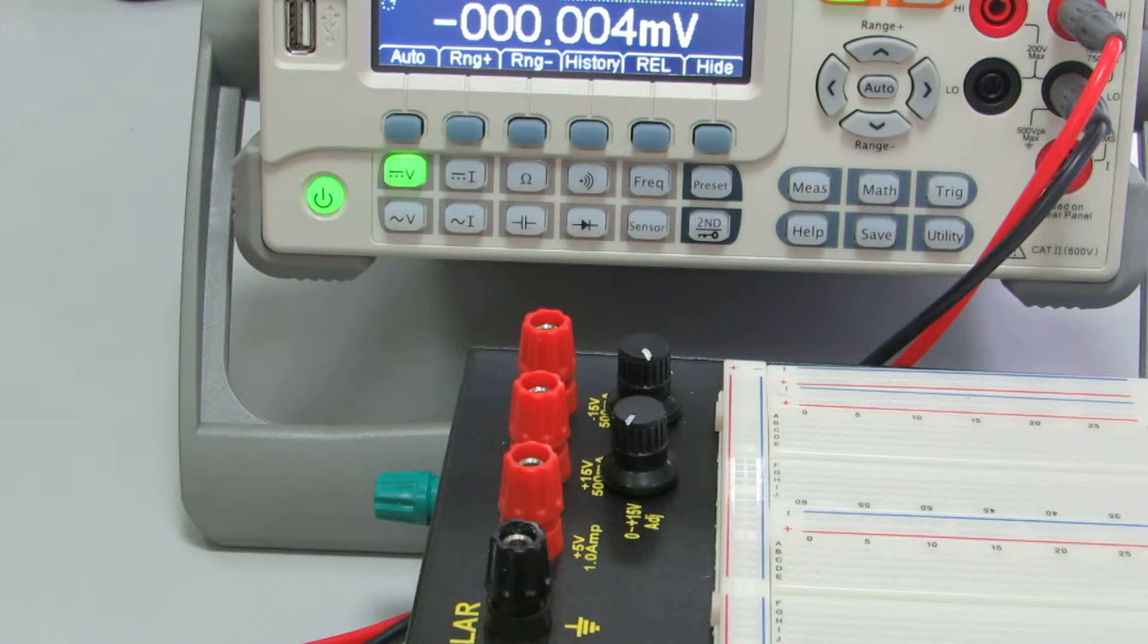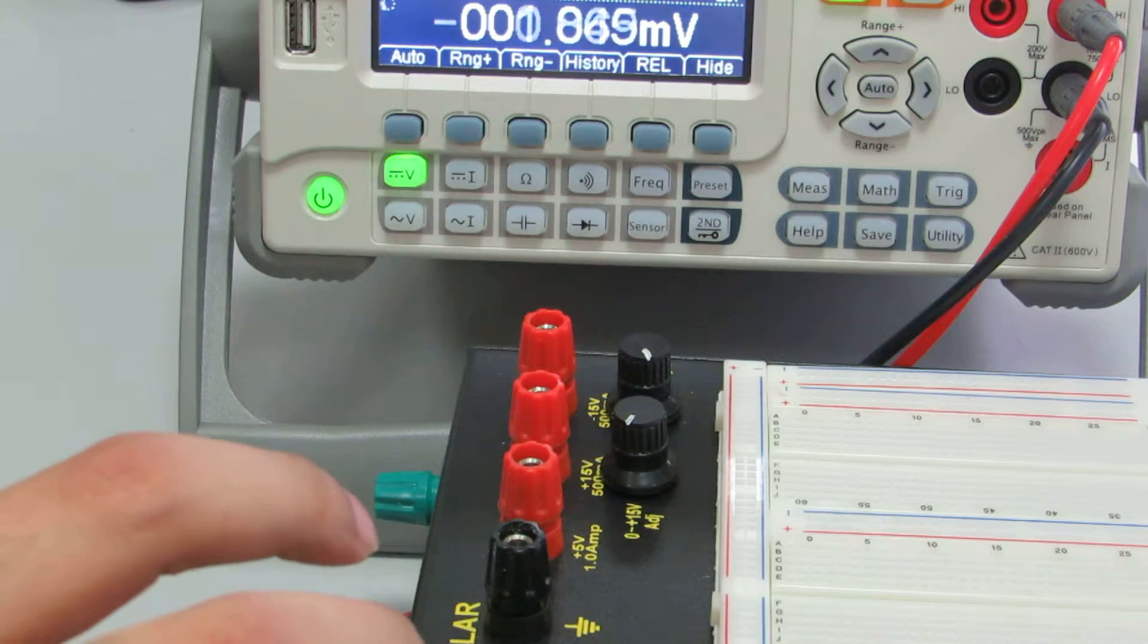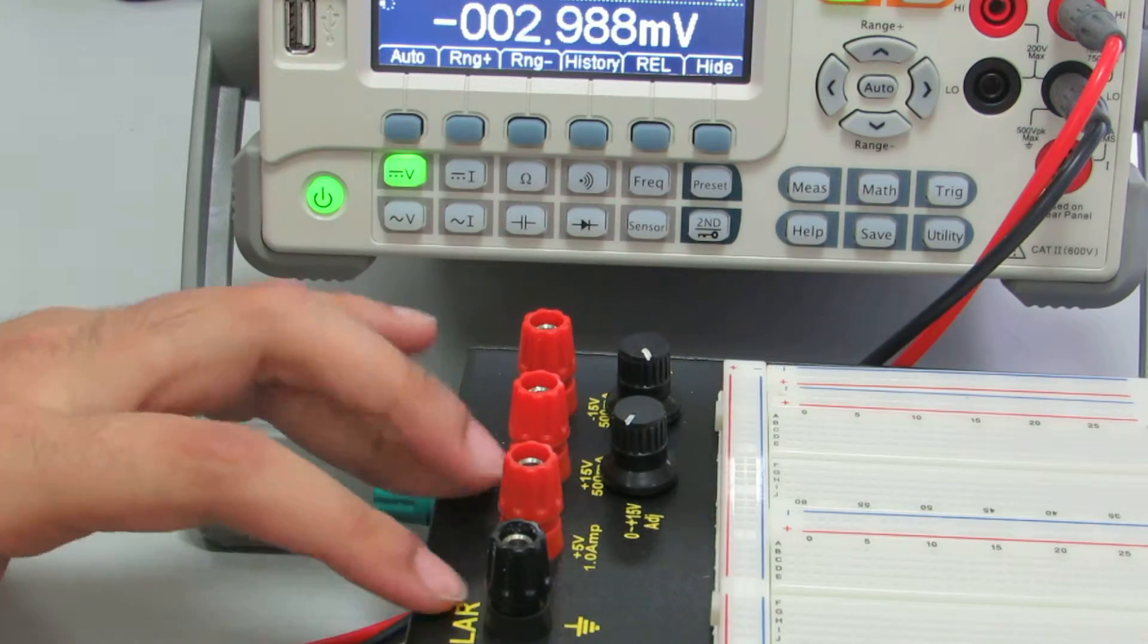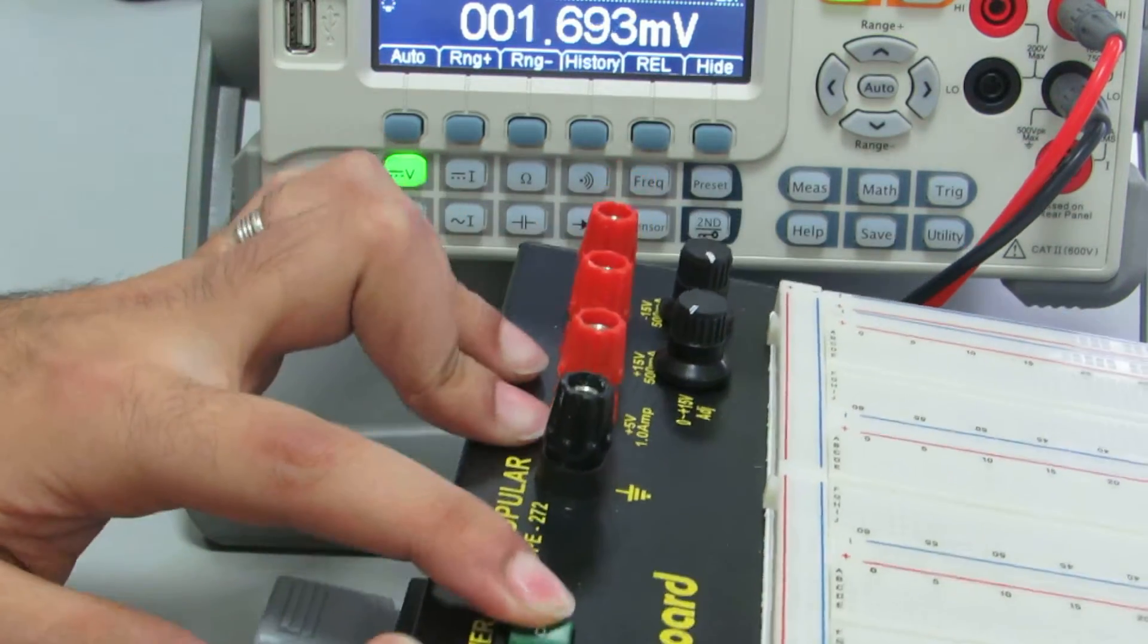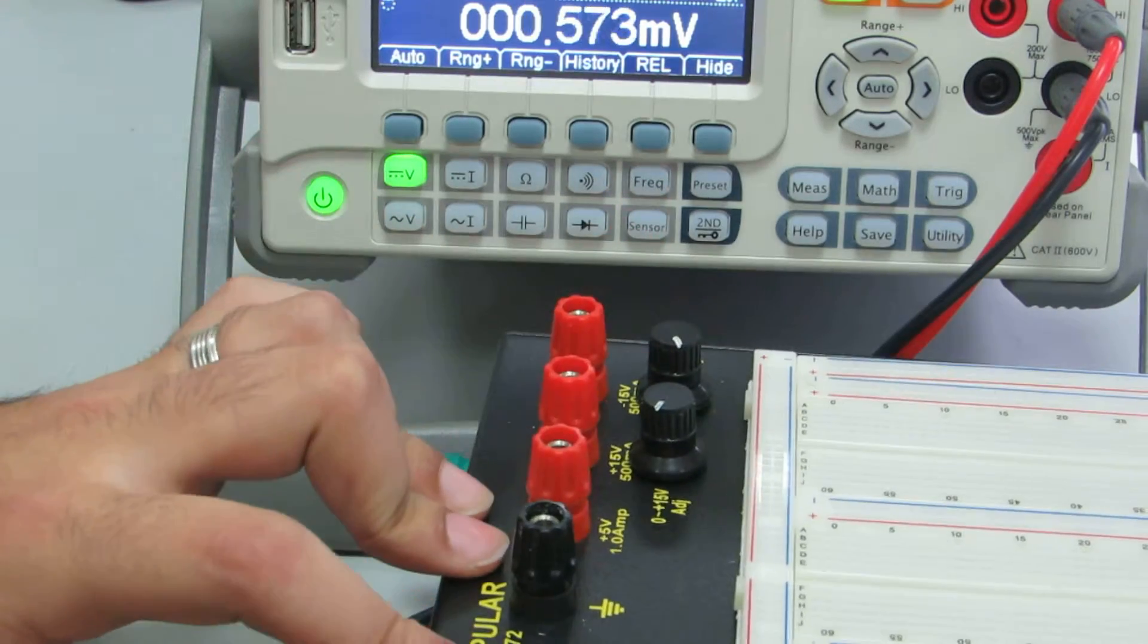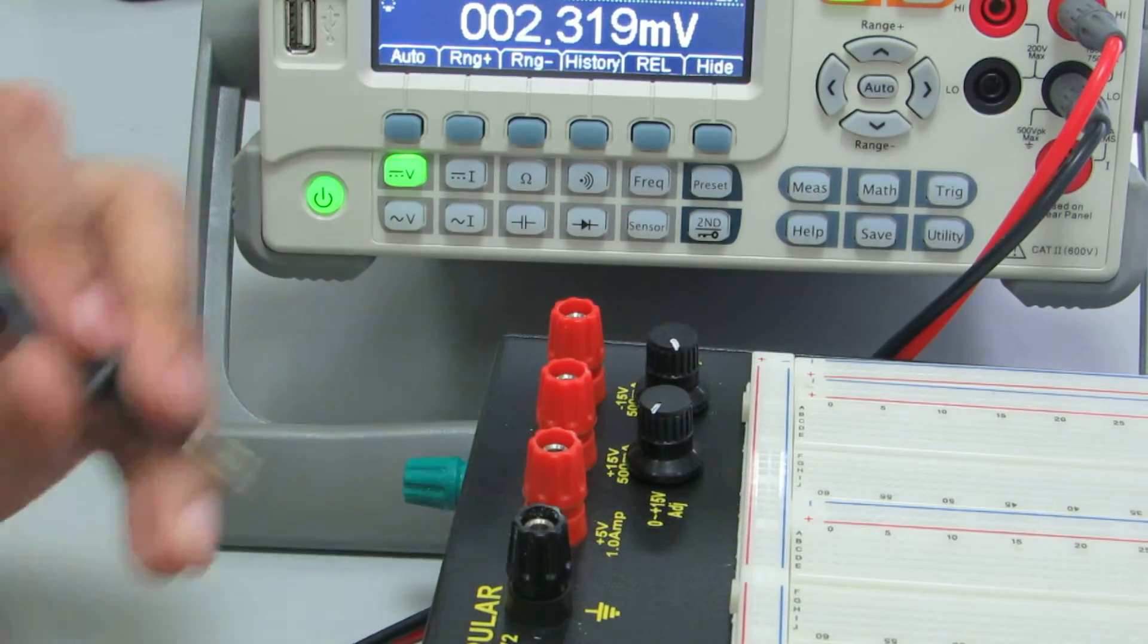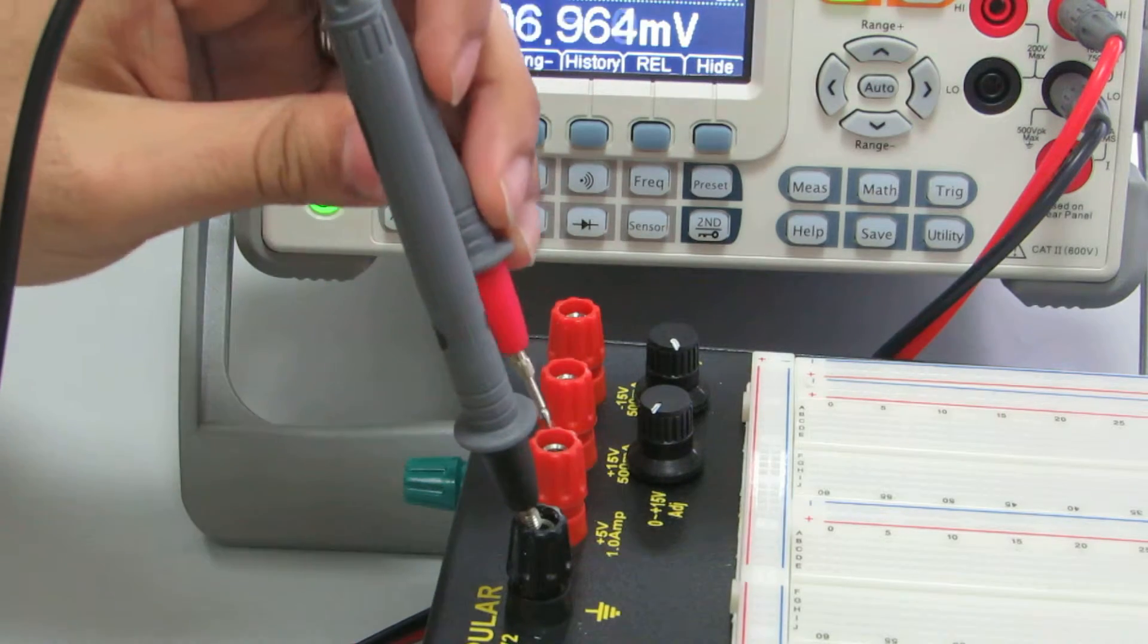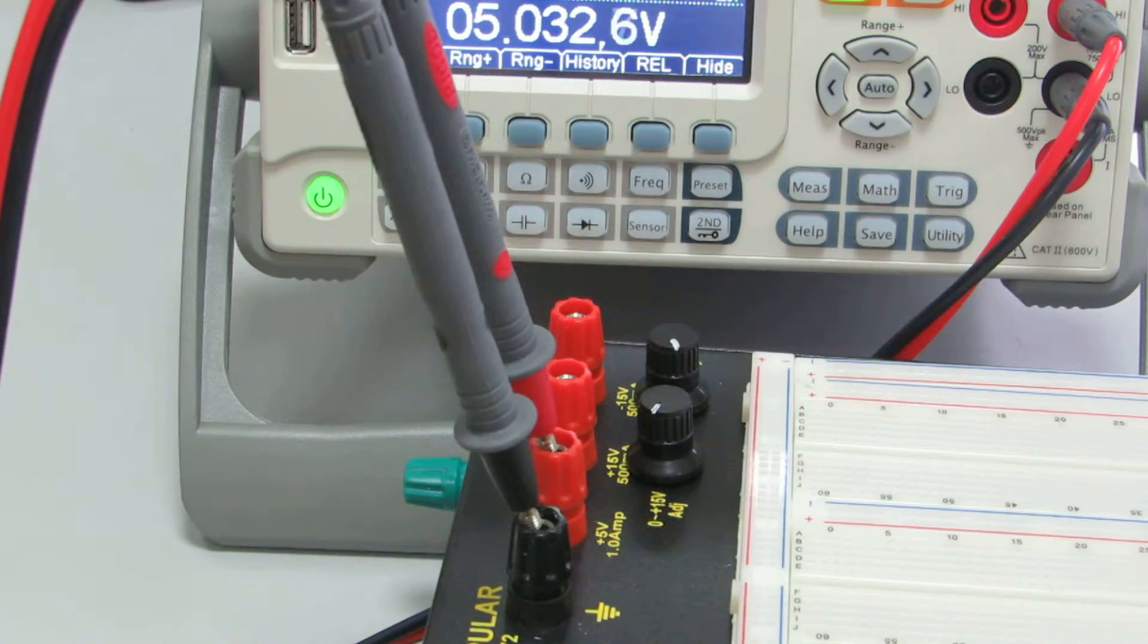Now we simply just turn it on from here and we measure the voltage. So ground wire to ground and this one to five volts. So right now it is measuring 5.0326.